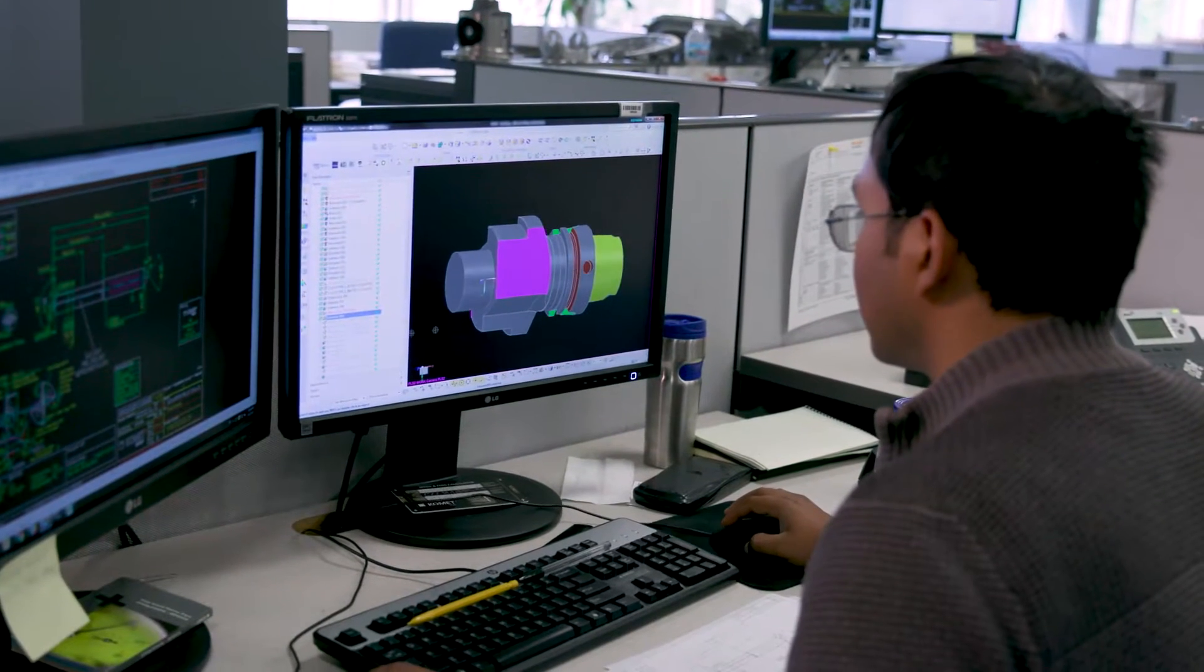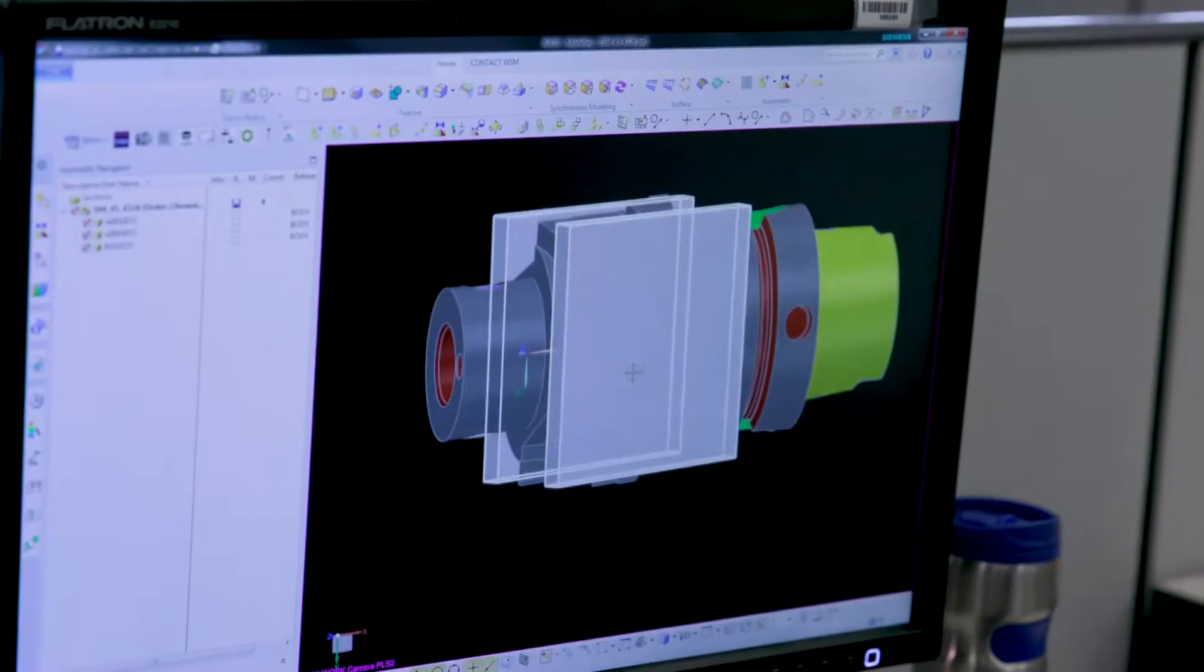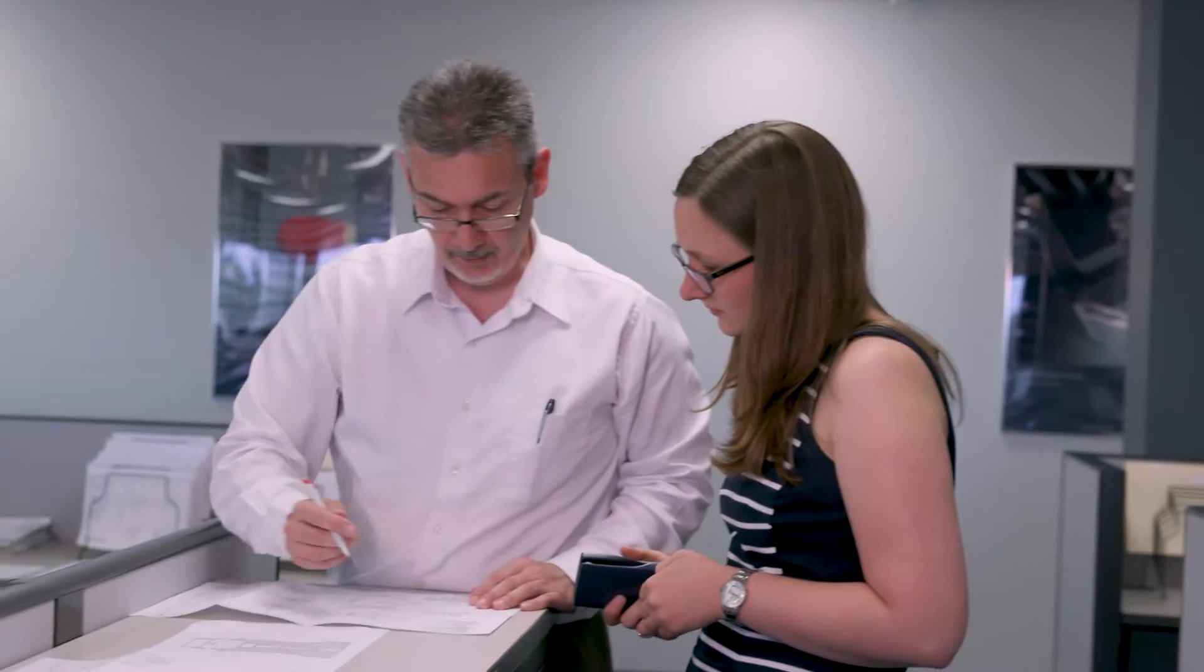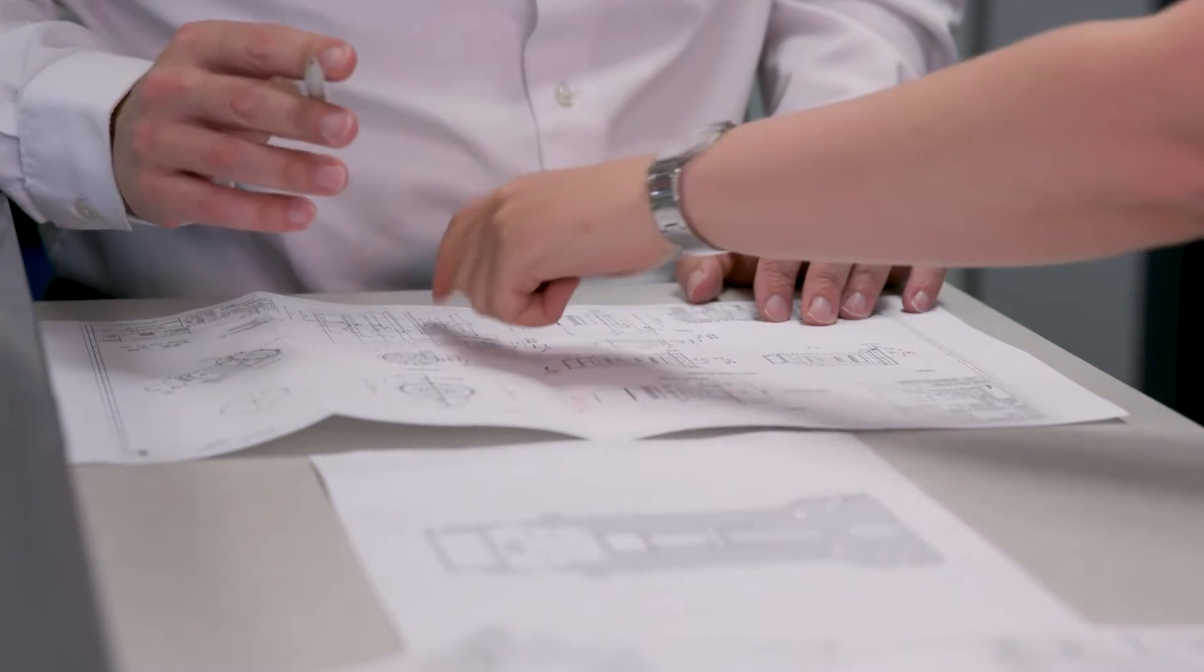What we try to do from an engineering standpoint on special tooling is we take the technology we build into most of our standard products and we fine tune it for very specific applications. So let's say you have a drill, a thread you have to do, a spot face, or a chamfer, where a lot of times a customer would use a single tool for each operation.